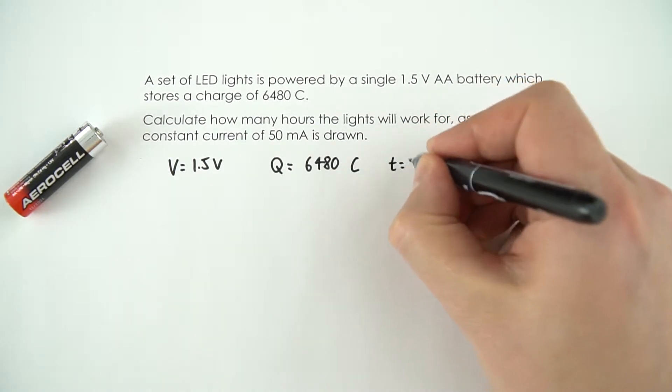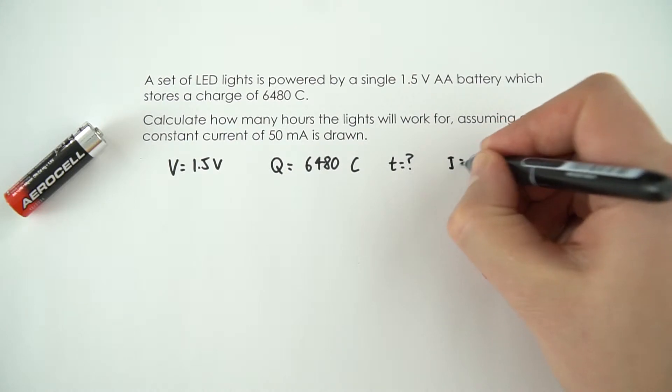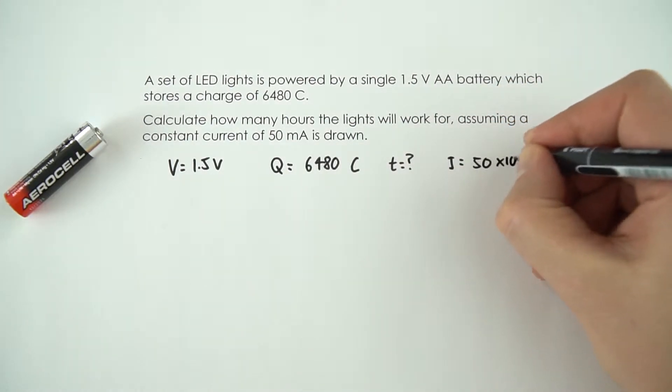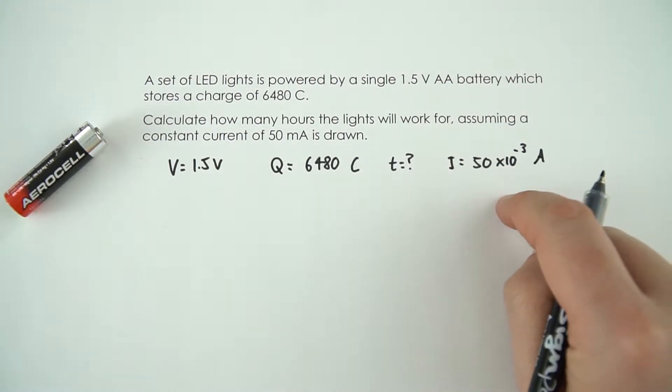We don't know the time, that's our unknown, but we do know that the current I is equal to 50 milliamps and I'm going to write that as 50 times 10 to the minus 3 amps. And that's going to just help me when I come to actually put this into my calculator.